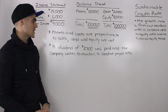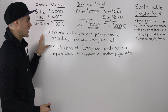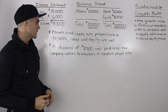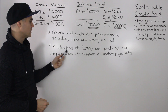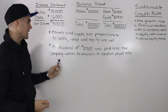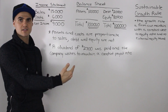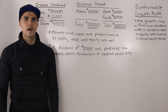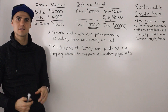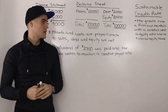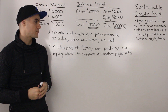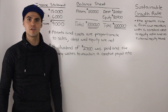In addition to the financial statements, there's other information provided. Assets and costs are proportionate to sales, but debt and equity are not. A dividend of $2,700 on this $9,000 net income was paid, and the company wishes to maintain a constant payout ratio. If you'd rather not write all of this out, I put a link to lecture notes in the description box. You can print those out for convenience.